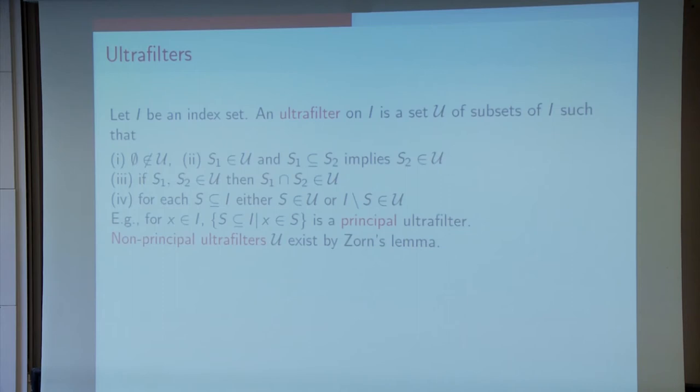The obvious examples of such sets, the only obvious such examples, are the family of subsets containing some fixed point. These are called principal ultrafilters and they're not what we're interested in. We're interested in the other filters, non-principal ultrafilters, which exist by Zorn's lemma.